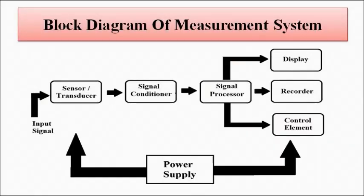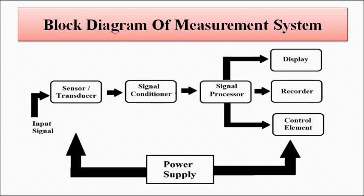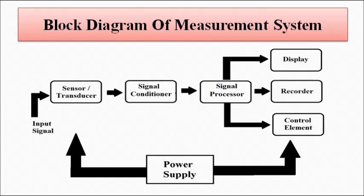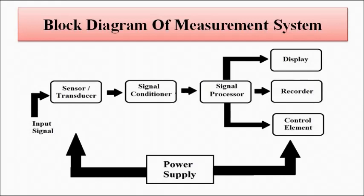The basic block diagram representation of a measurement system consists of sensors, transducers, signal conditioning and processing elements, the output, and the power supply. Each of these blocks plays a part in the performance characteristic of the system. For example, the number of stages of the instrument affects the time delay in generating the output — how quickly we obtain the output after the input is given depends on the sensor, transducer, signal conditioning, and processing elements.